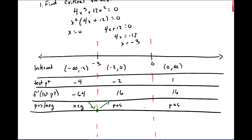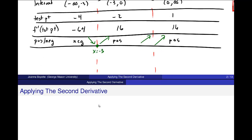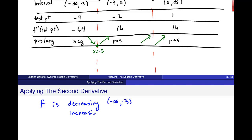I get negative in the first interval, positive in the second, and positive in the third. So this tells me the function is going down and then up — I should get a relative minimum there. This interval is just up and up, so no relative max here, but a relative minimum at x equal to negative 3. So f is decreasing on minus infinity to minus 3, and increasing on minus 3 to 0, and again on 0 to infinity.